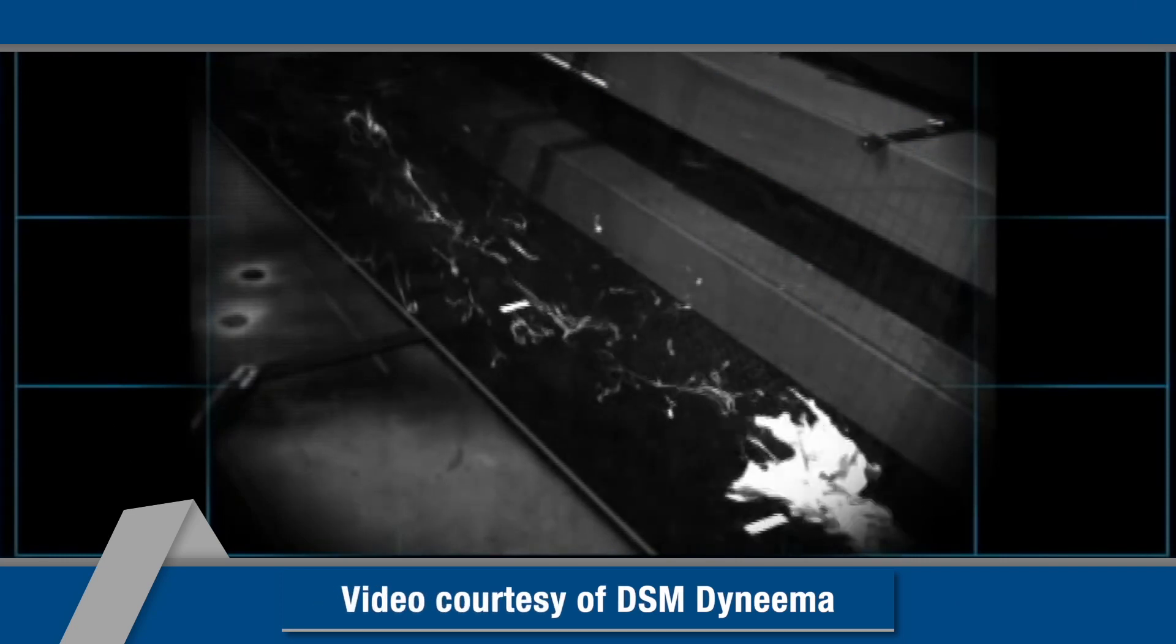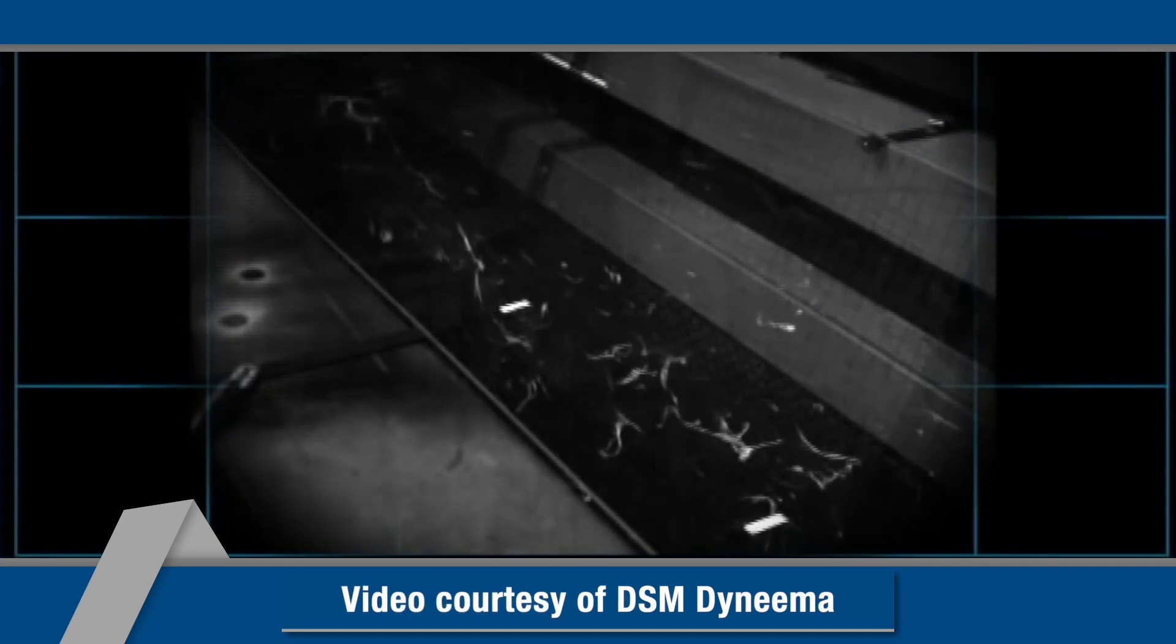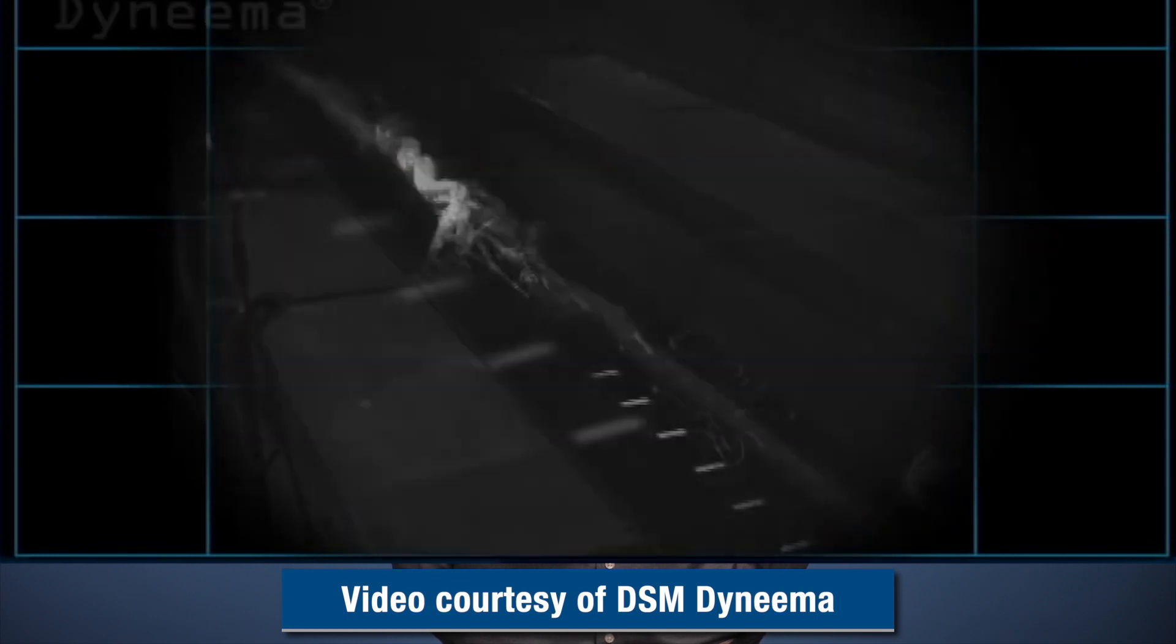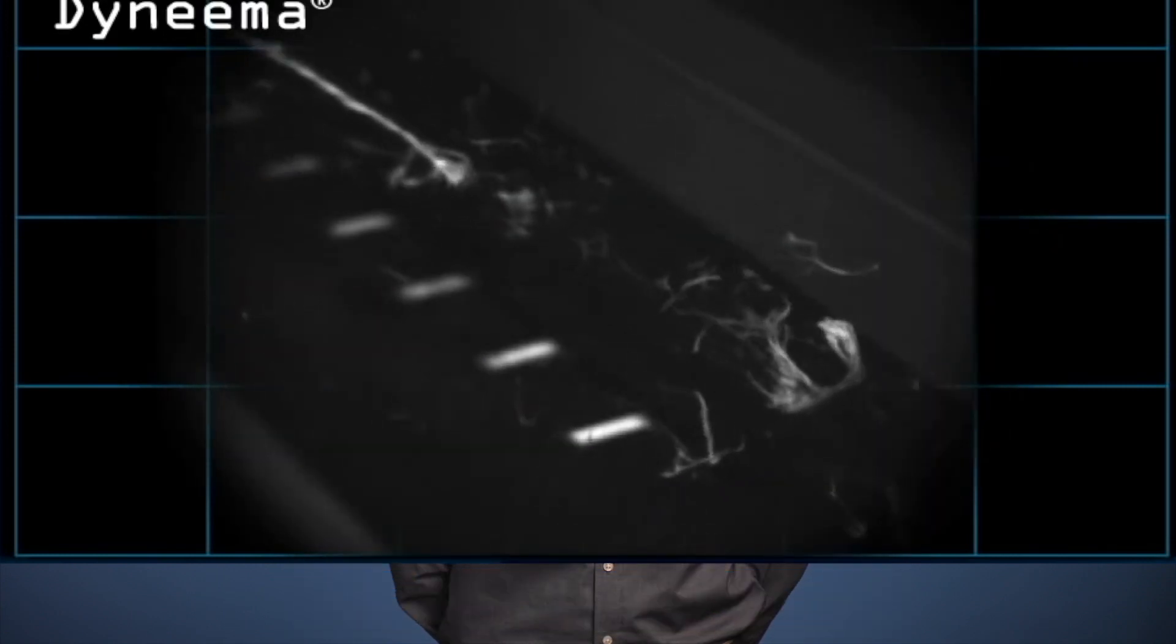When the maximum load is achieved and the rope breaks, the energy is released in the form of recoiling along its length and the rope snaps back away from the break location.